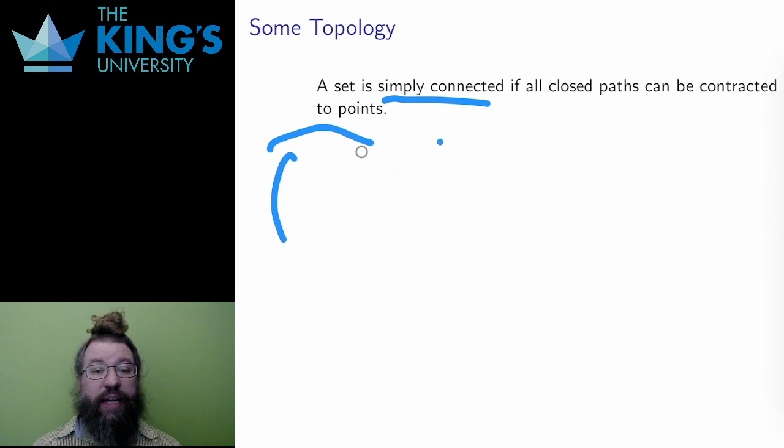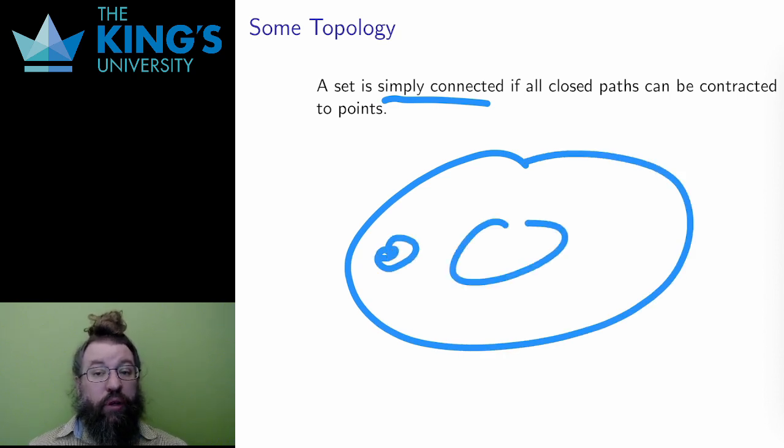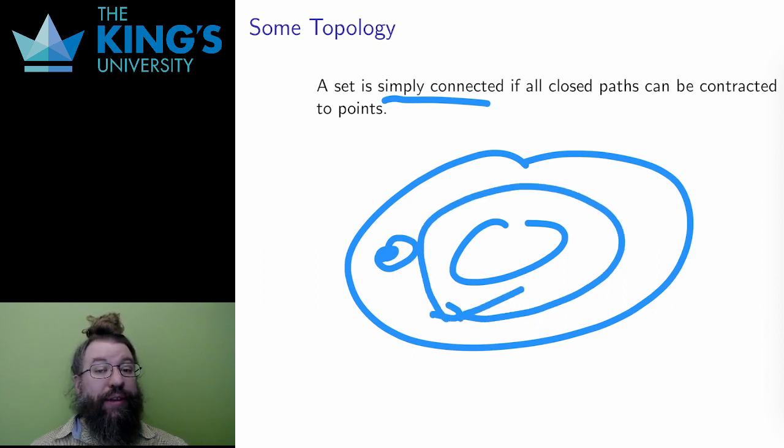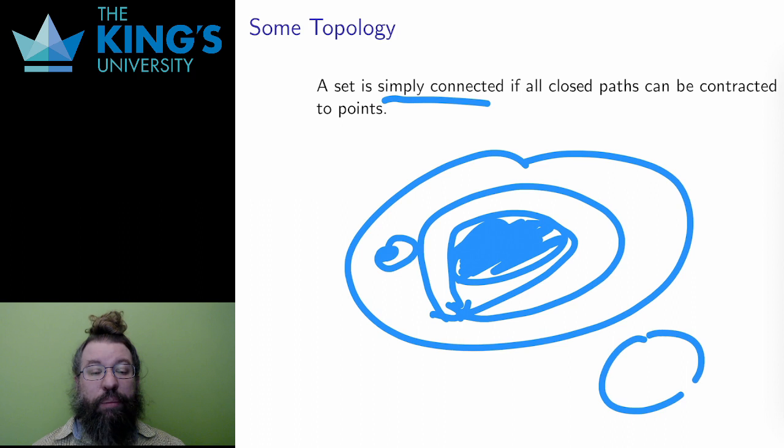Well, what is contracted? It means that the path can be shrunk in a smaller and smaller loop until it is just a dot. If all closed paths can do this, then there are no holes. This can be seen in an example. Here is a ring. If I draw a little circle in one part, well, then I can contract this little circle to a point. However, if I draw a circle around the ring, I can't contract it without leaving the set. The ring has a hole in the middle, so it is not simply connected. A disc, on the other hand, is simply connected, since any path inside a disc can be contracted to a point.